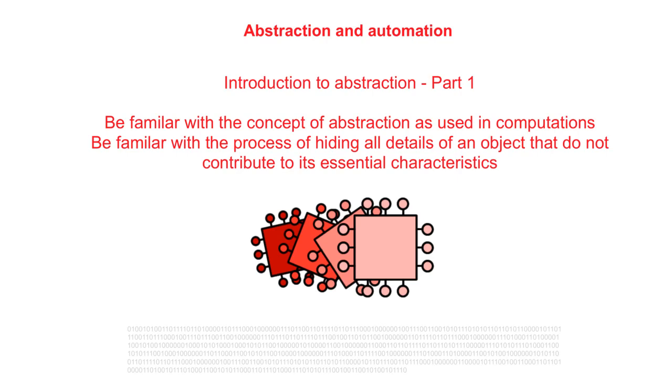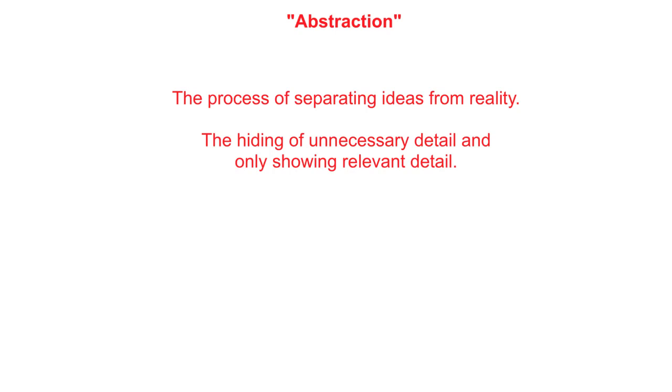In this first introductory video we're going to explain and outline what the nature of abstraction is. In the videos that follow we're going to be going into abstraction and its various forms in a lot more detail. In essence, as a summary, abstraction is the process of separating ideas from reality — the process of hiding unnecessary detail and only showing detail which is relevant.